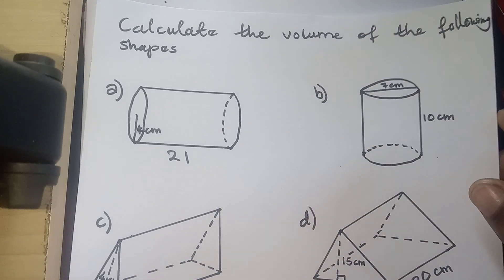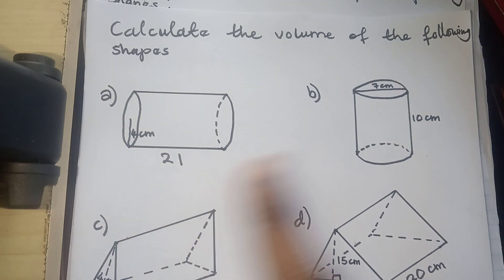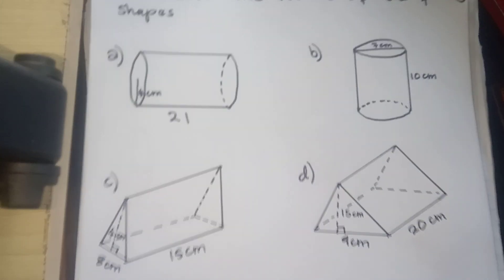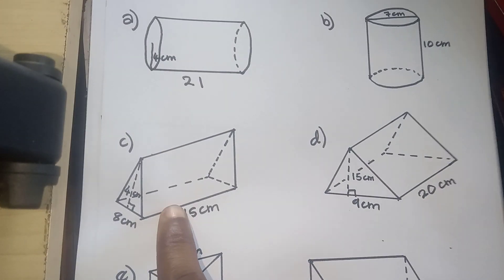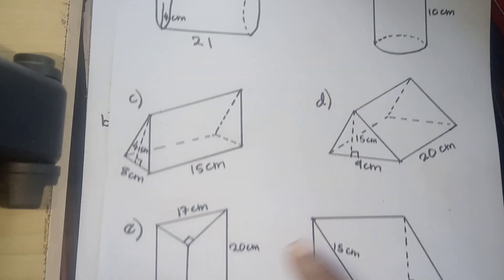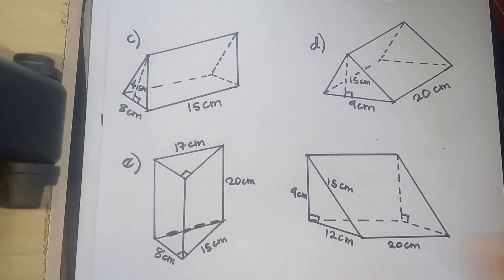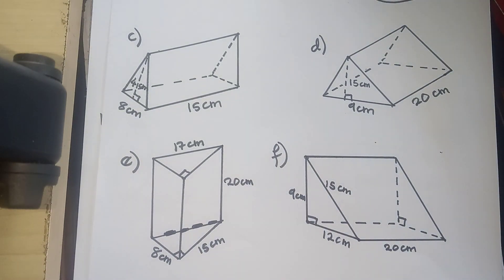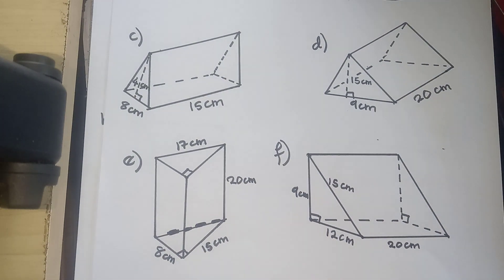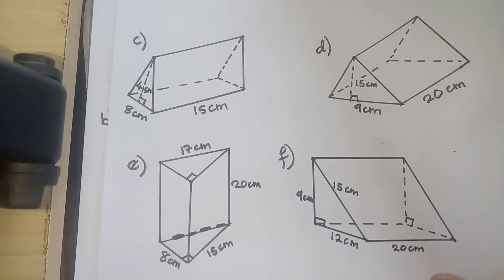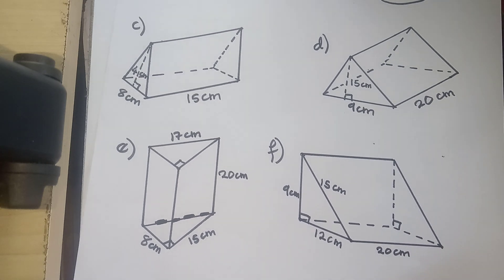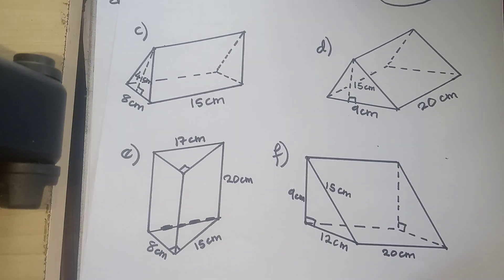Now let me give you some practice work based on today's examples. Calculate the volume of the following shapes — we have parts A through F as shown. You can answer these questions and submit them.